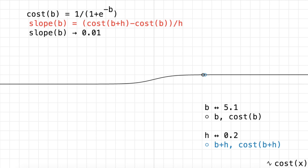That's how you numerically approximate the slope of any function. The benefit of this approach is you don't have to change anything to approximate the slope of any function you're interested in. The detriments are that it's an approximation — the smaller h is the better it gets, but it's still an approximation — and it's a bit computationally expensive since we have to calculate our cost twice. Let's see how we can be more efficient by deriving the slope of our cost function next.